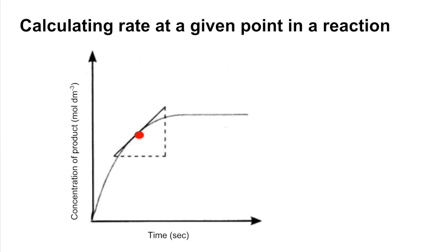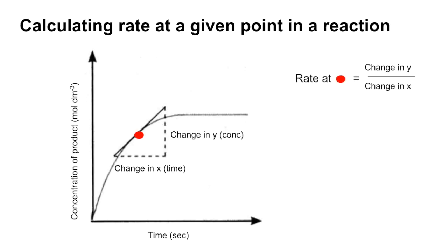Sometimes you have to calculate the rate of reaction at a given point in the reaction. So using this graph, if we had to calculate the rate at a specific point, the first thing you'd do is construct a tangent to the line, and then work out the change in y — the change in concentration — and the change in x — the change in time. Remember the definition: rate is the change in concentration per unit time, so rate is the change in y divided by the change in x.